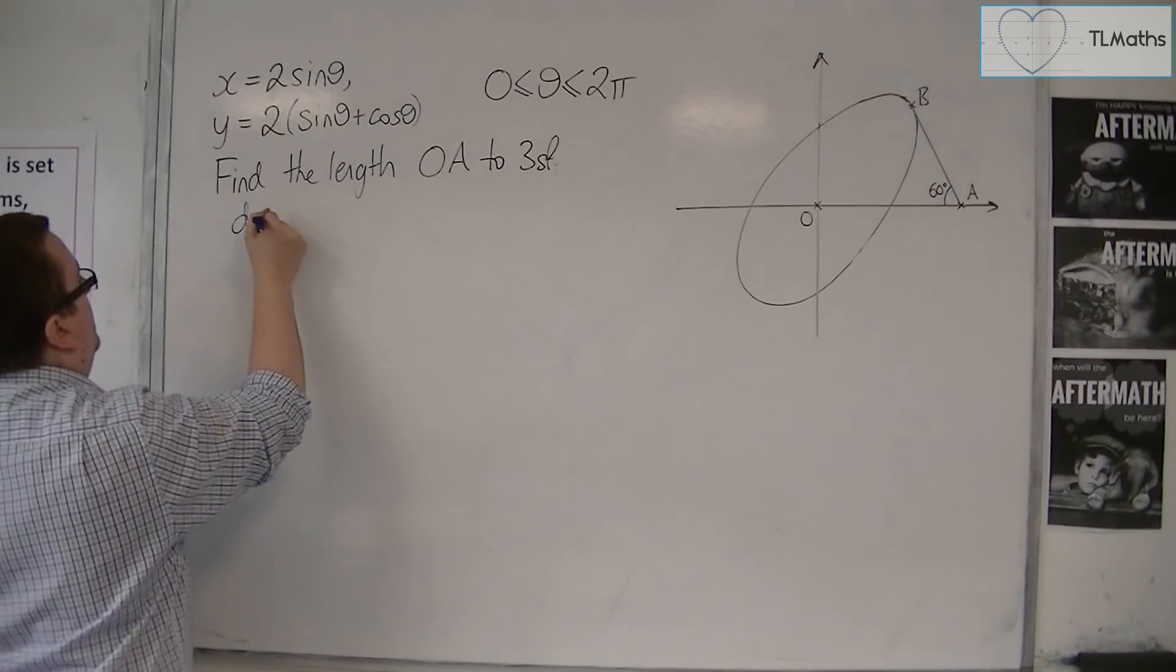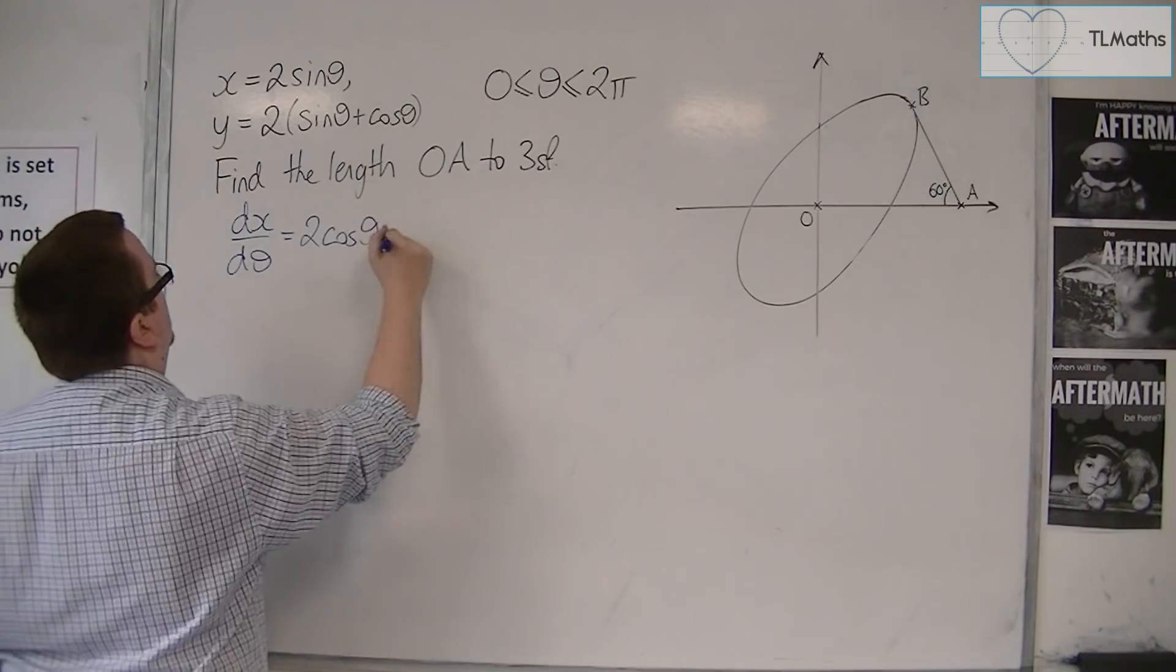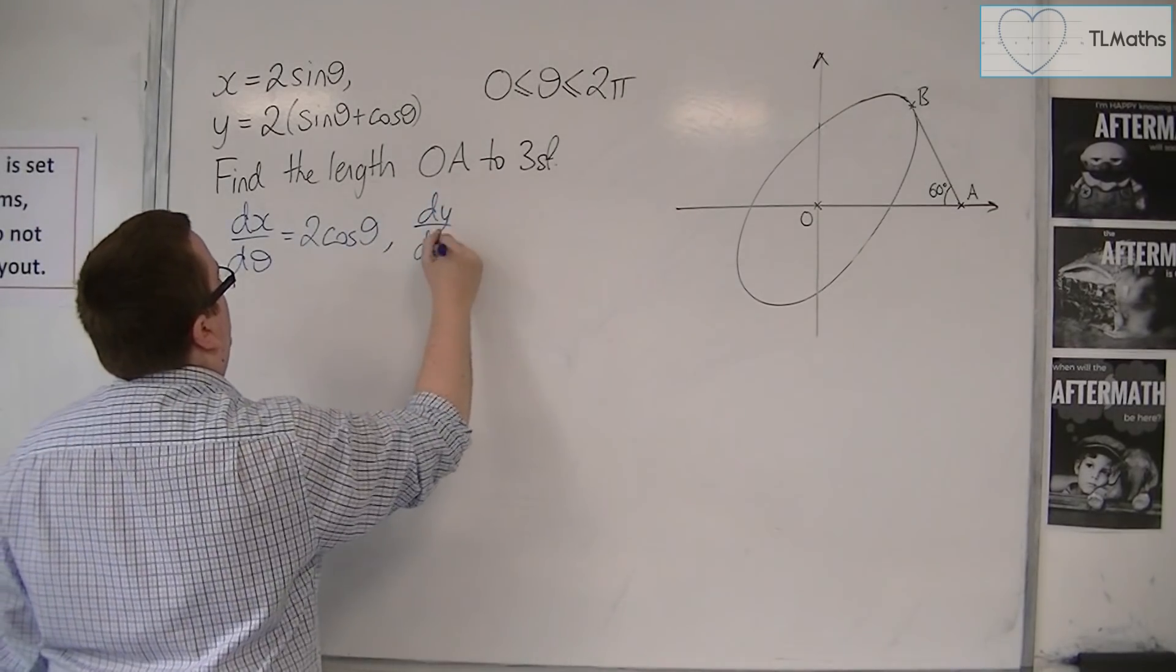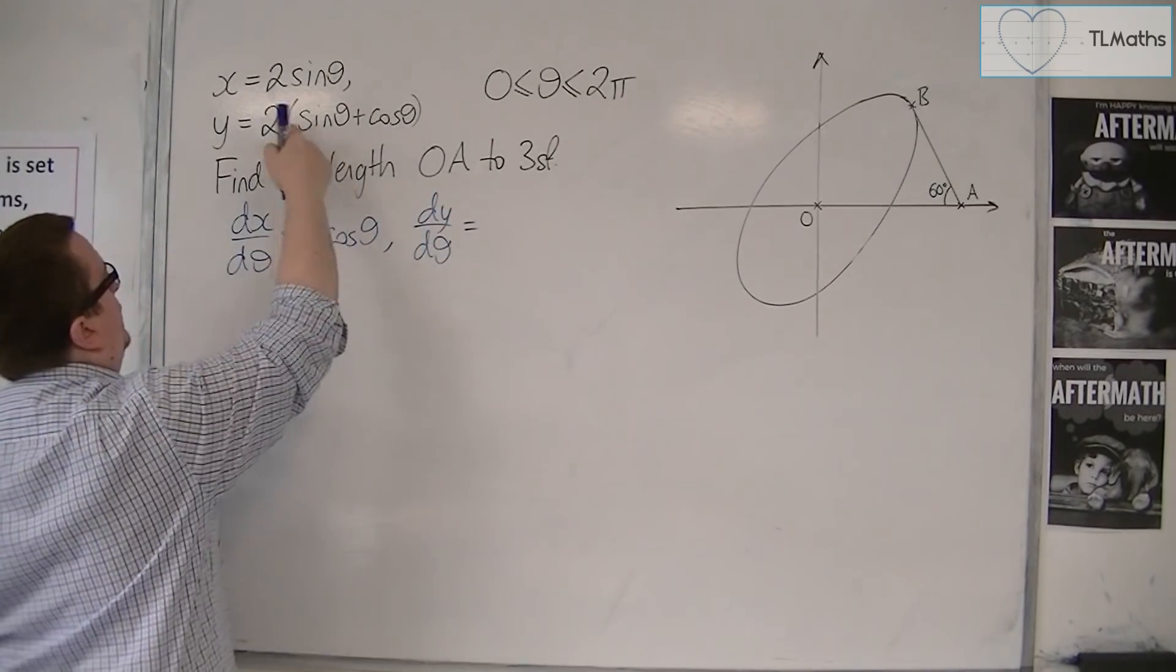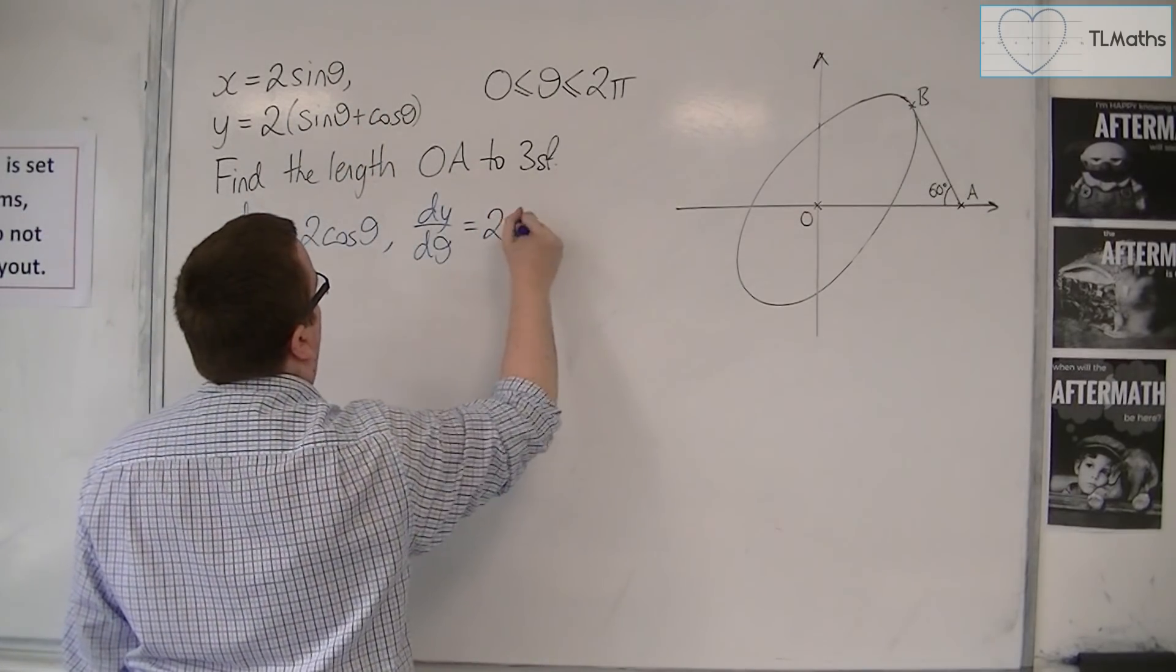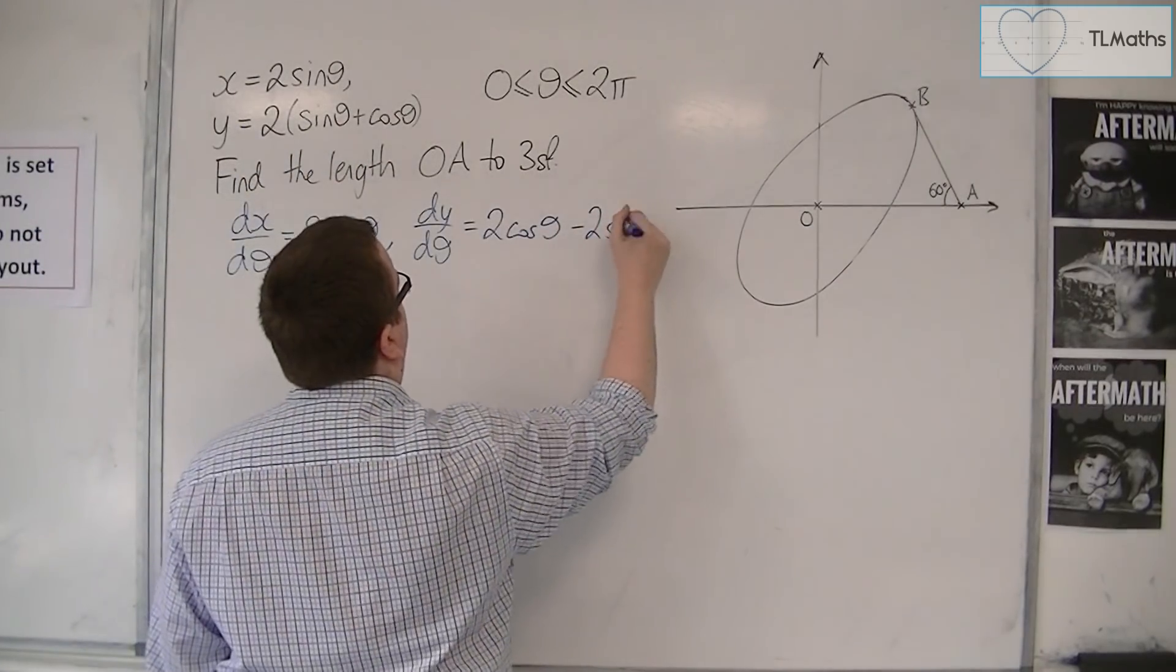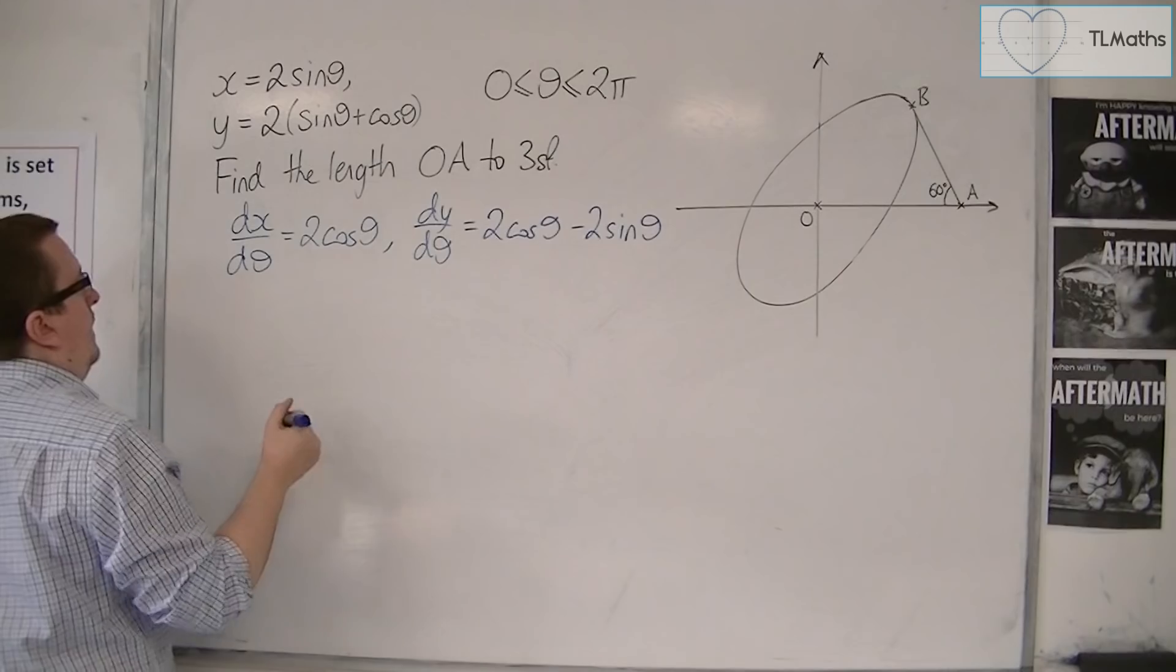I need to find dx by d theta first, which is 2 cos theta. dy by d theta is the derivative of y, so 2 sine theta differentiates to 2 cos theta, and 2 cos theta differentiates to minus 2 sine theta.